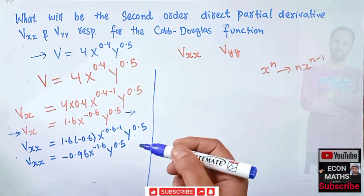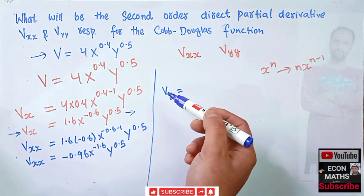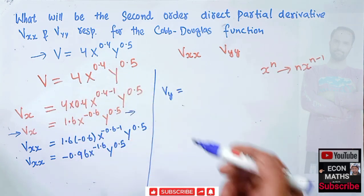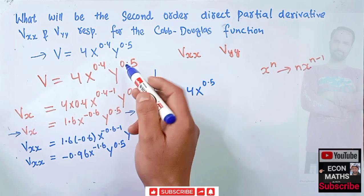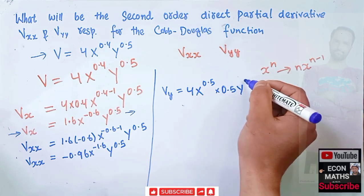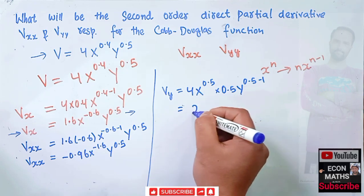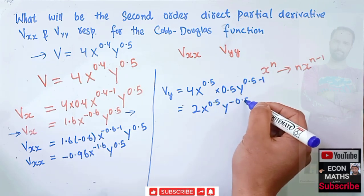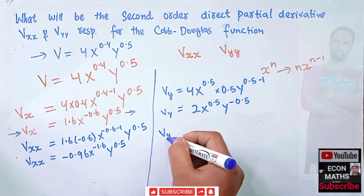Similarly, to find the direct partial with respect to y, we compute vy — the first partial derivative of the Cobb-Douglas function with respect to y. The derivative of y^0.5 gives 0.5 as coefficient, so we have 4 * 0.5 * x^0.4 * y^(0.5-1), which gives vy = 2 * x^0.4 * y^(-0.5).